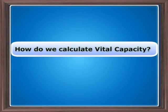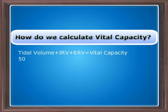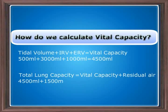The vital capacity is calculated by adding tidal volume to IRV and ERV: 500 millilitres plus 3000 millilitres plus 1000 millilitres, which equals 4500 millilitres. The total lung capacity includes the vital capacity and residual air: 4500 millilitres plus 1500 millilitres, which equals 6000 millilitres.